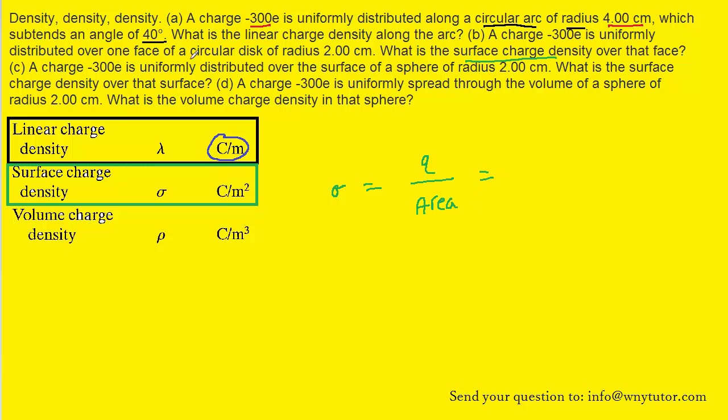In this case, the area is relatively easy. It's a circular disk. So all we need is the area of a circle, which of course is pi times radius squared.